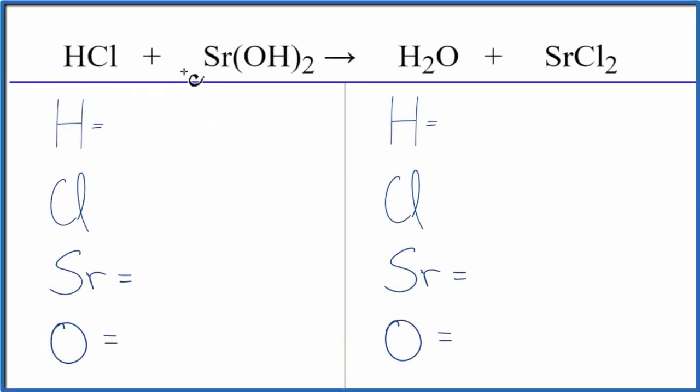To balance the equation HCl plus Sr(OH)2, that's hydrochloric acid and strontium hydroxide, let's count the atoms up on each side of the equation.